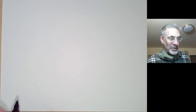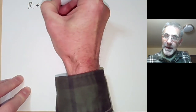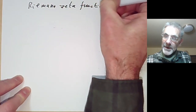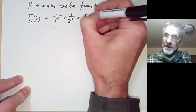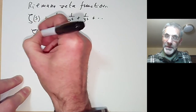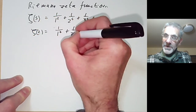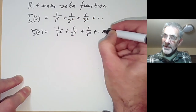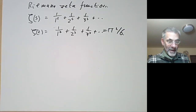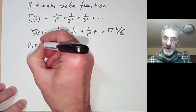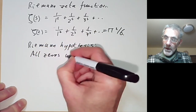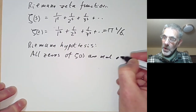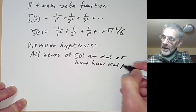A famous example of this is the Riemann zeta function, one of the most famous functions in mathematics. It's defined as zeta of s equals 1 over 1 to the s plus 1 over 2 to the s plus 1 over 3 to the s and so on. For example, zeta of 2 is 1 over 1 squared plus 1 over 2 squared plus 1 over 3 squared and so on, which equals pi squared over 6. This function is particularly notorious because of the Riemann hypothesis, which states that all non-trivial zeros of zeta of s have real part equal to one half.